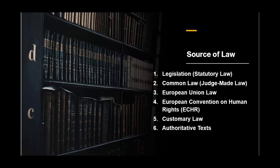Number six: Authoritative texts. These are influential legal texts and commentaries written by respected legal scholars. While they aren't laws themselves, they can guide judges in making decisions. Blackstone's Commentaries on the Laws of England is a famous example that has historically shaped the understanding of common law principles.